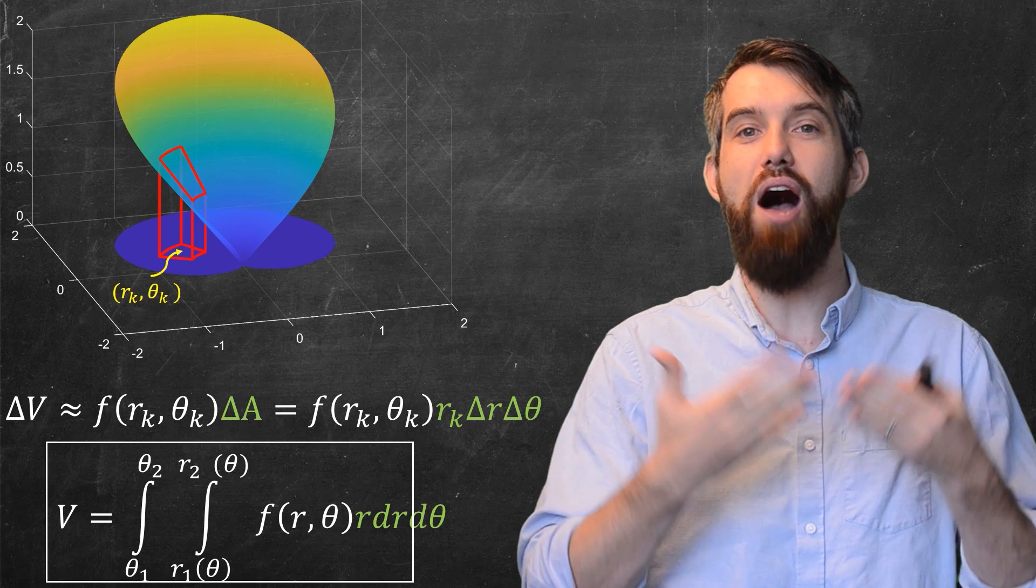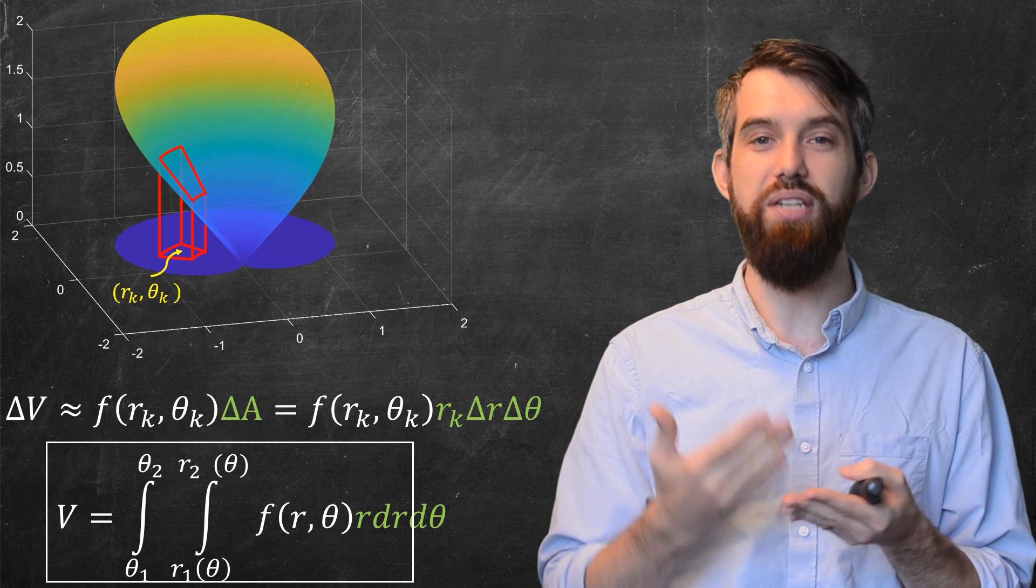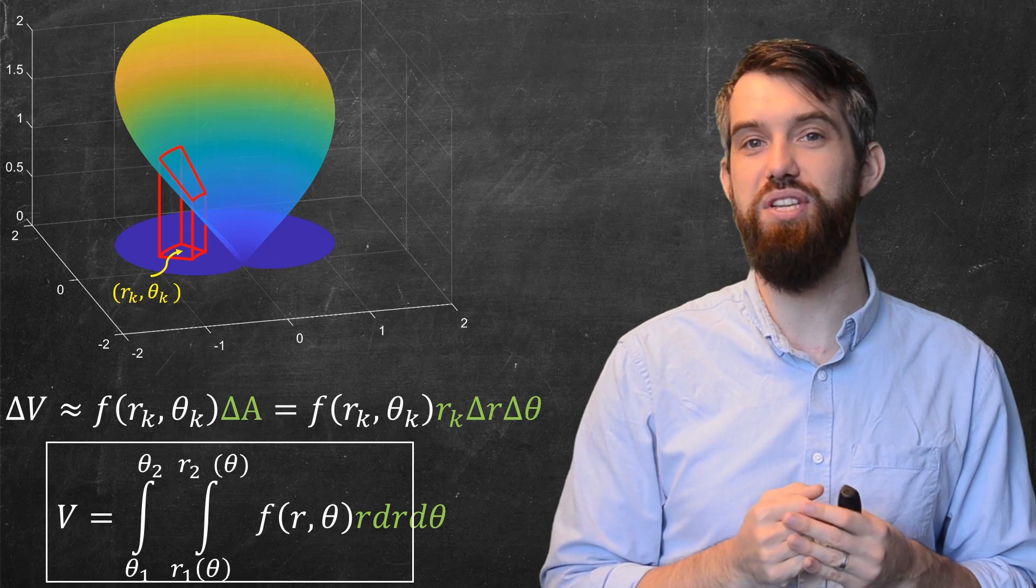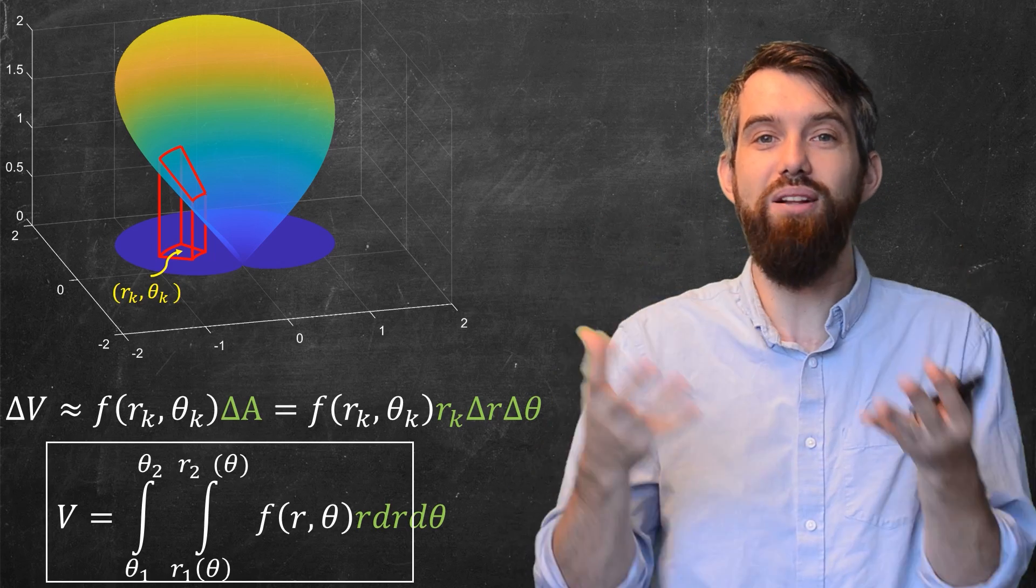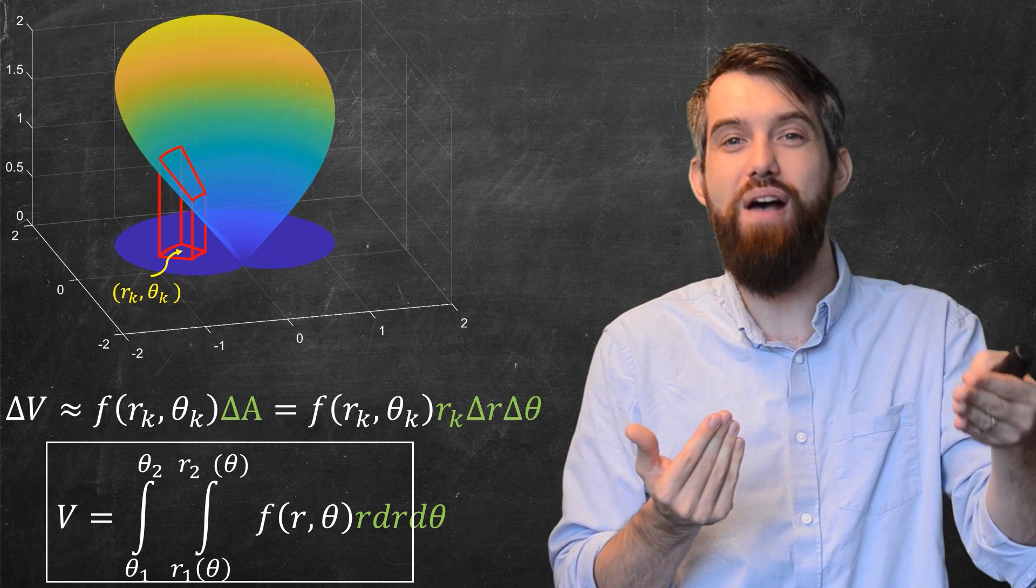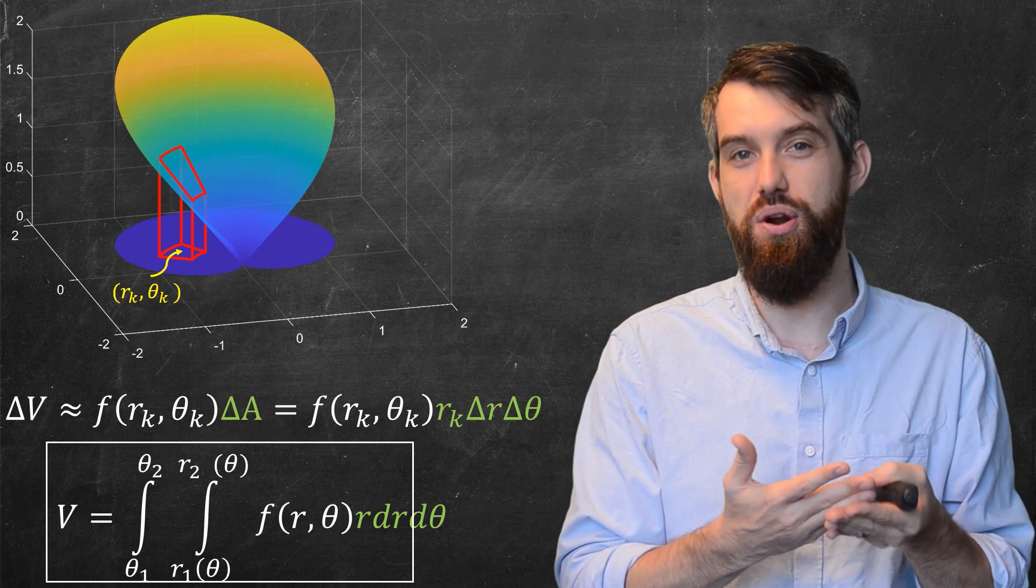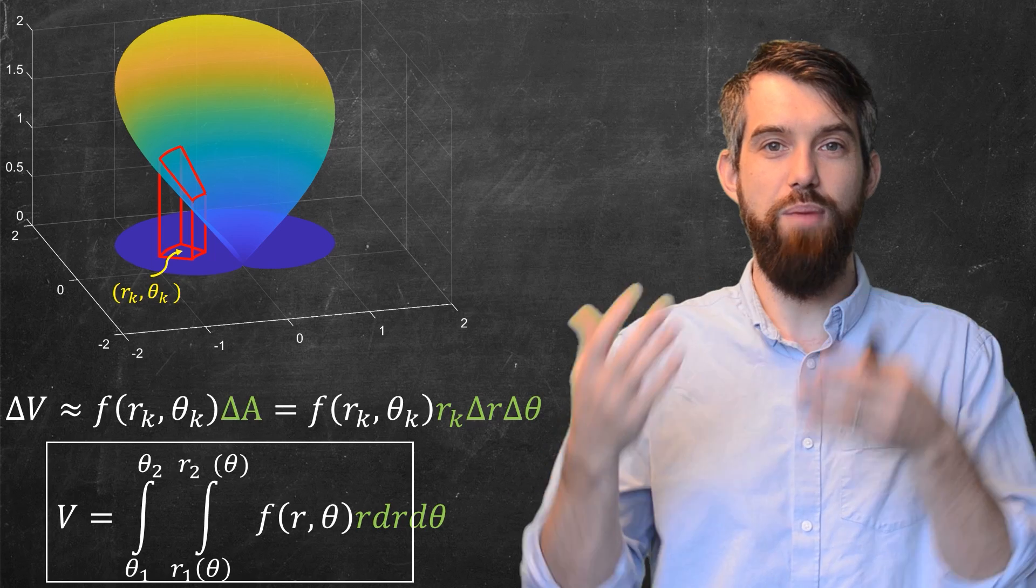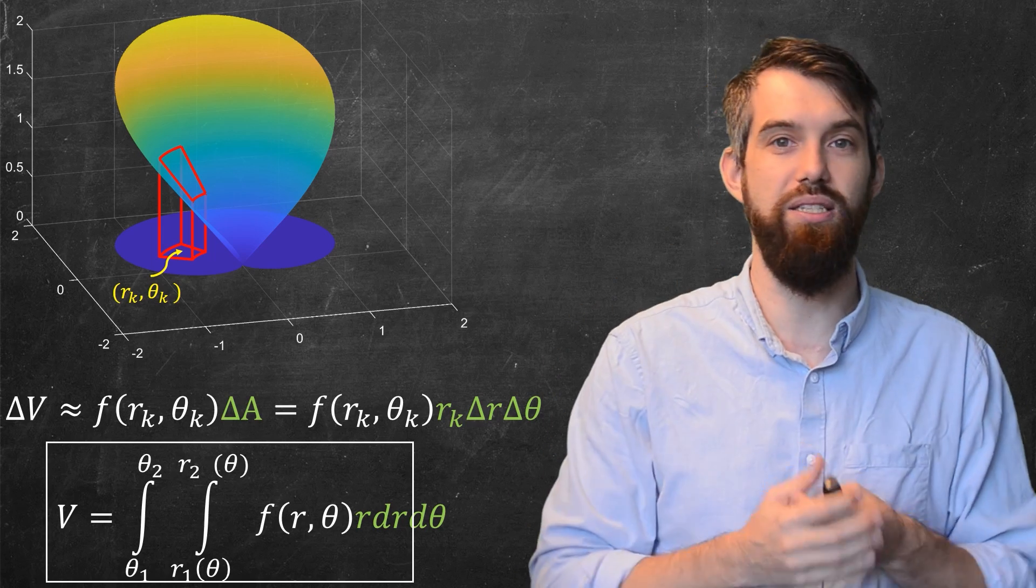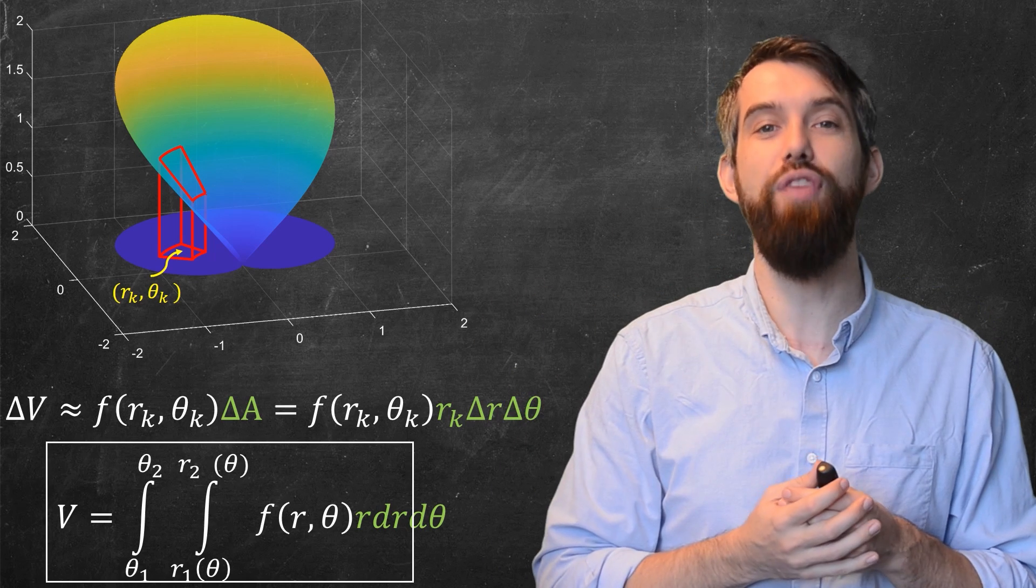One of the new things here is the r in that r dr d theta. So in your delta A, your delta A scaled with how far it was, how large the r value was. So in the dA, you now have an r, it is an r dr d theta. And then for the double integral, the inside bounds are just radiuses in terms of theta, and then your outside bounds are just what are your theta values between?